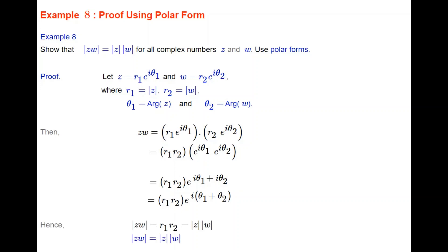The modulus of Z times W is the number out the front, which is R1 times R2, and that's just the modulus of Z times the modulus of W. The result is proved very easily in polar form.